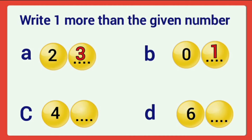Next, four. One more than four — what is the next number? Count one forward from four, or add one. It is five. Next D: six. One more than six — what is the number? One more than six is seven.